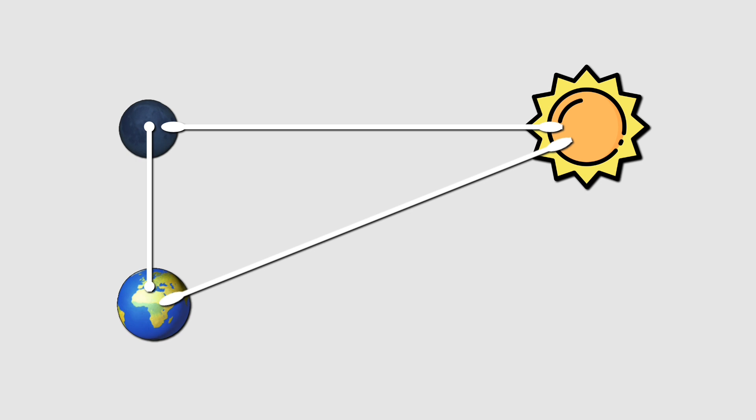Aristarchus used this moment to draw a right-angled triangle with the Earth as one vertex, the moon as another forming a right angle, and the sun as the third vertex. He measured the acute angle at the Earth and found it to be 87 degrees.